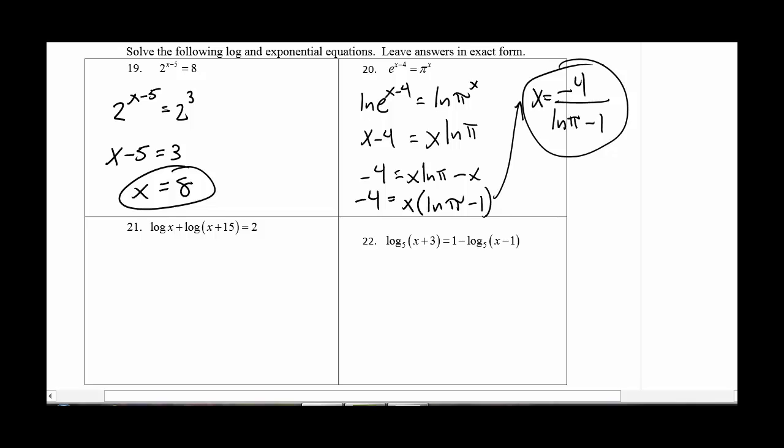Number 22, now we're going to go into log equations. So here I have two logs. So I want to bring them into a single log. And that's going to be product rule. So the log of x times x plus 15 equals 2. And now what I want to do is I want to convert that into its exponent form. So I need a base. I don't see a base. But if you don't see one, that's really base 10.